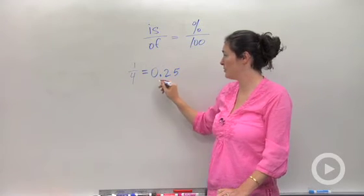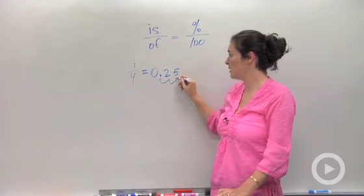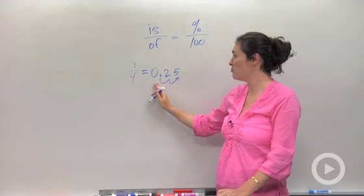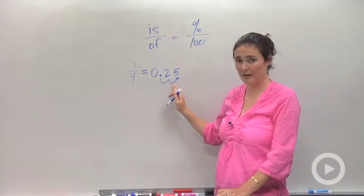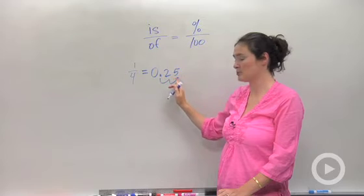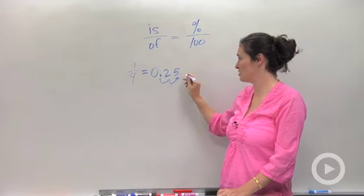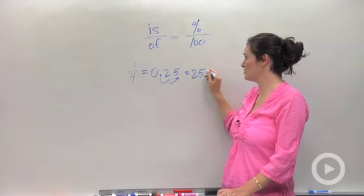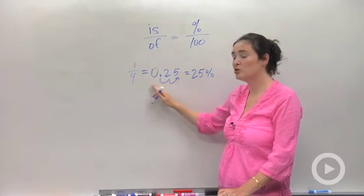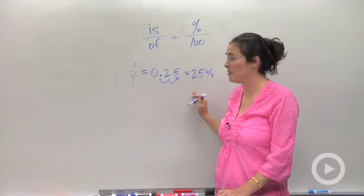To turn that into a percent, percent means out of 100, I would multiply 0.25 by 100, which is the same thing as moving the decimal place two spots to the right, so I could write this as 25%.